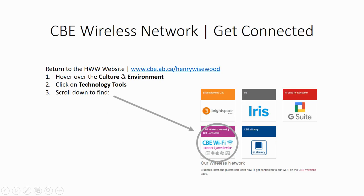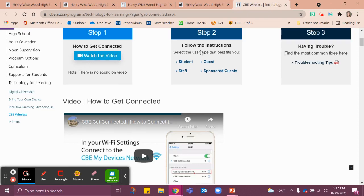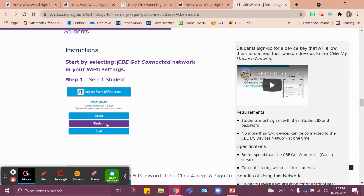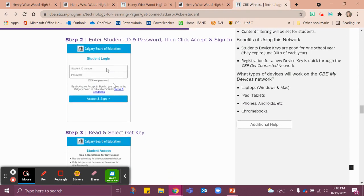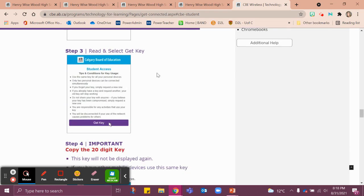Let's get you connected on the wireless network. Do you have a personal device with you — maybe your cell phone? Take it out. Instructions are on the Henry Wisewood Technology Tools page. Under Technology Tools, find the icon that says CBE Wi-Fi and you'll find the instructions. Here are the CBE wireless instructions — Step 2 for Student. Start by selecting CBE Get Connected Network in your Wi-Fi settings. Select Student, enter your student ID and password, then click Accept and Sign In. Once you've read through the tips, select Get Key.